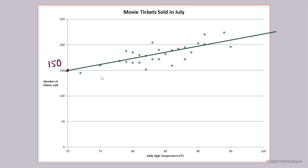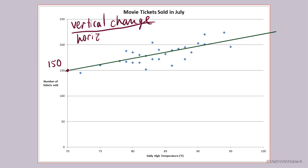The other quantity for a linear model is the constant rate of change, which from a graph means looking for the slope. Slope is the vertical change compared to the horizontal change. We are not looking at any of the specific points from the original scatter plot — we are only focusing on the line we have created. It doesn't matter which points on the line we choose, but it helps to use points where we have a good idea of what the coordinates are.